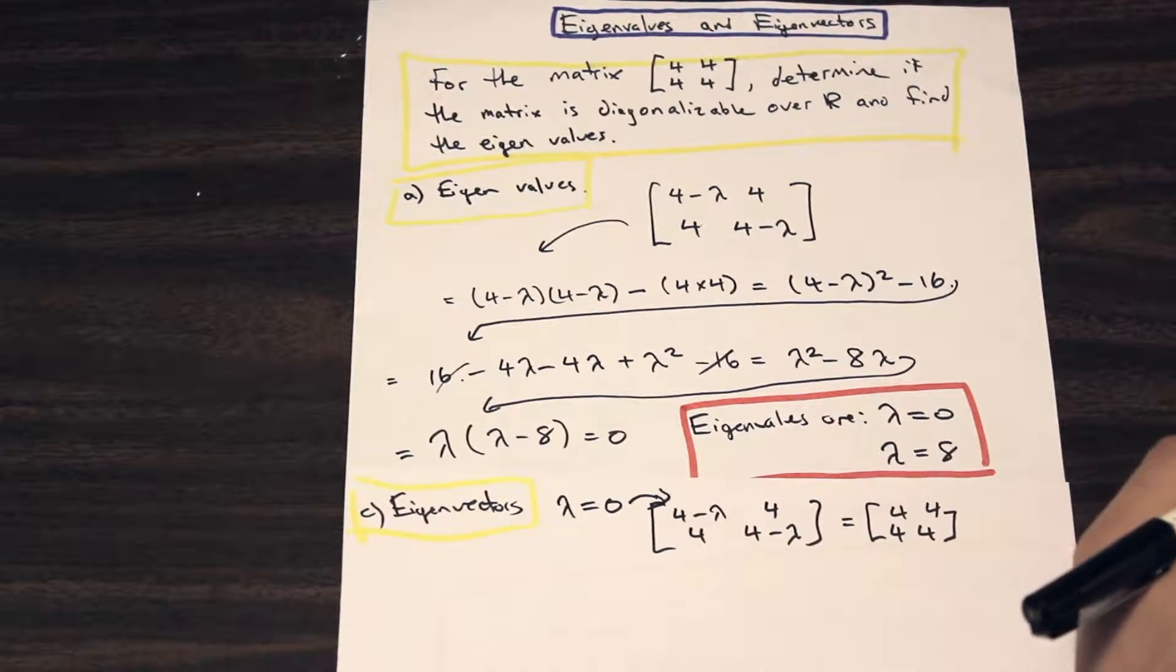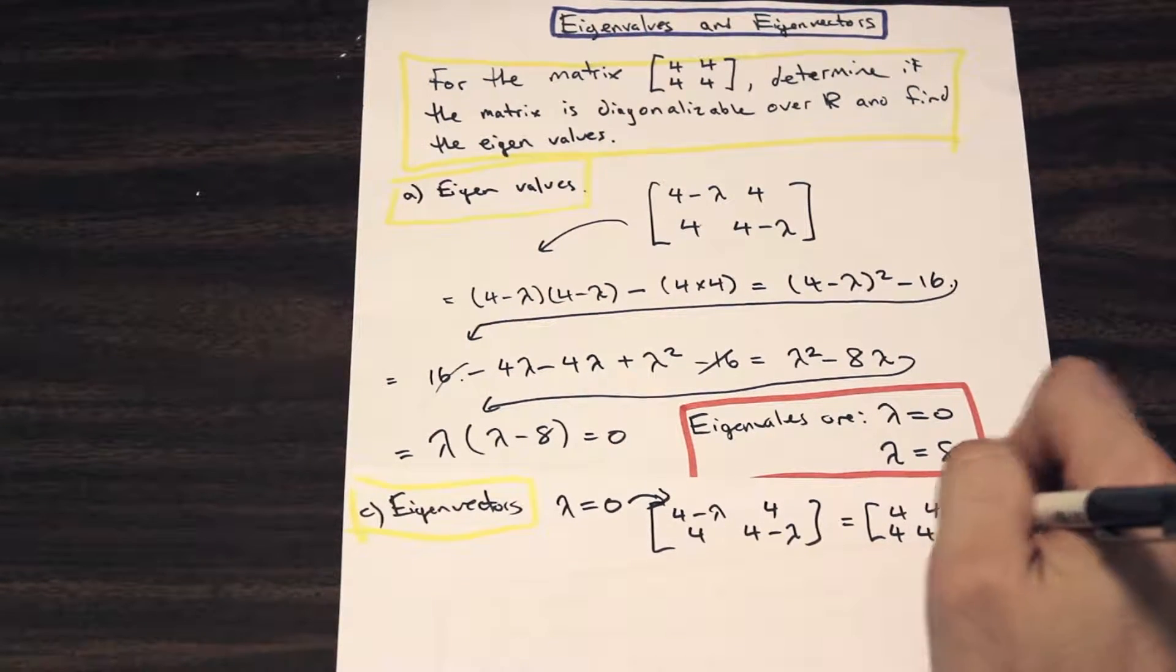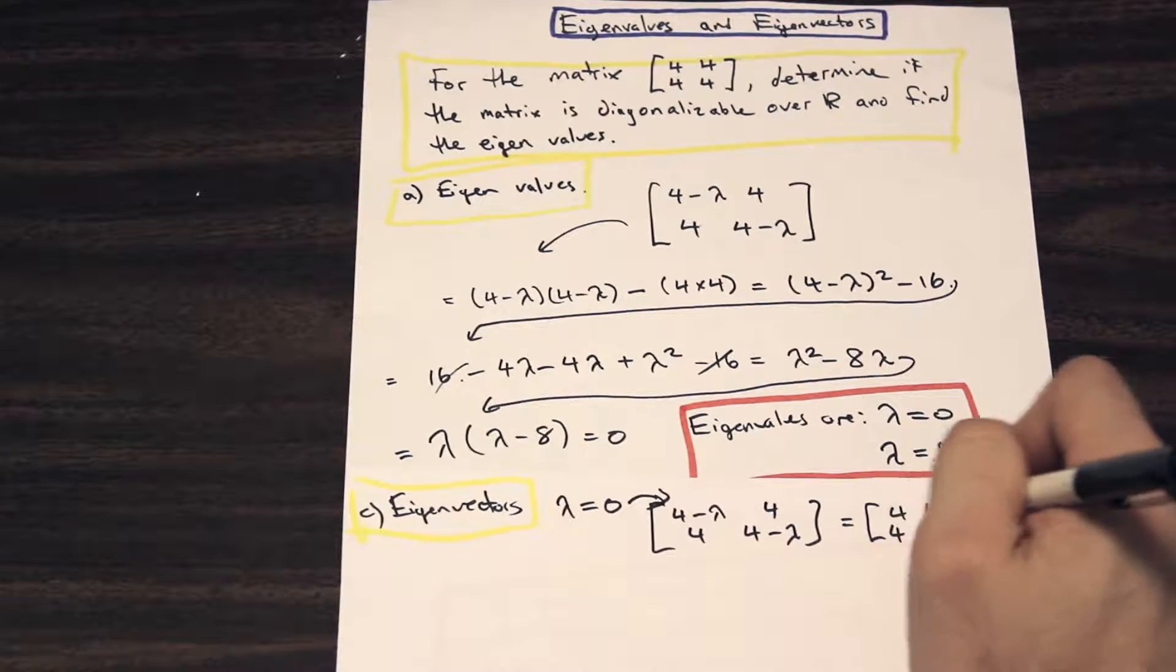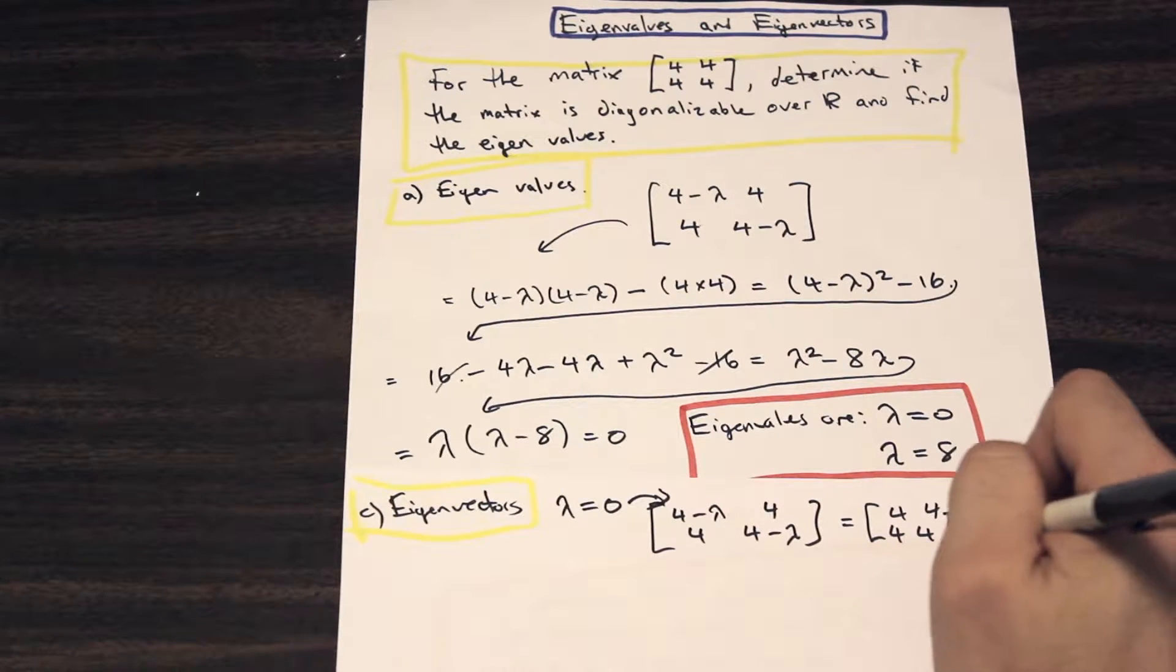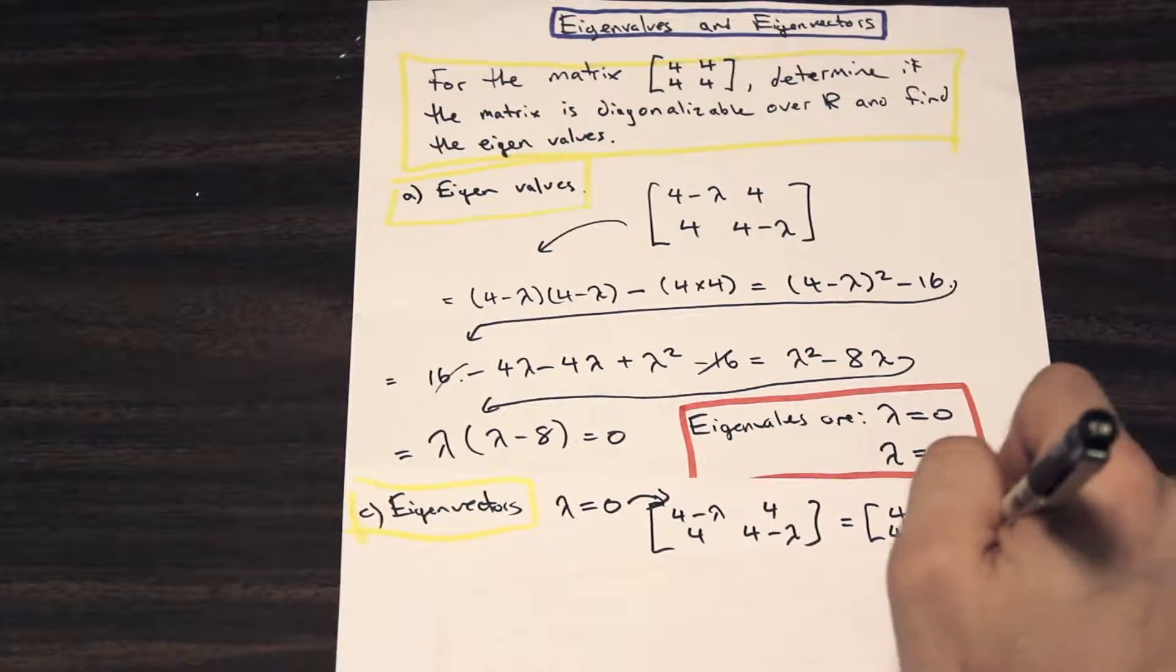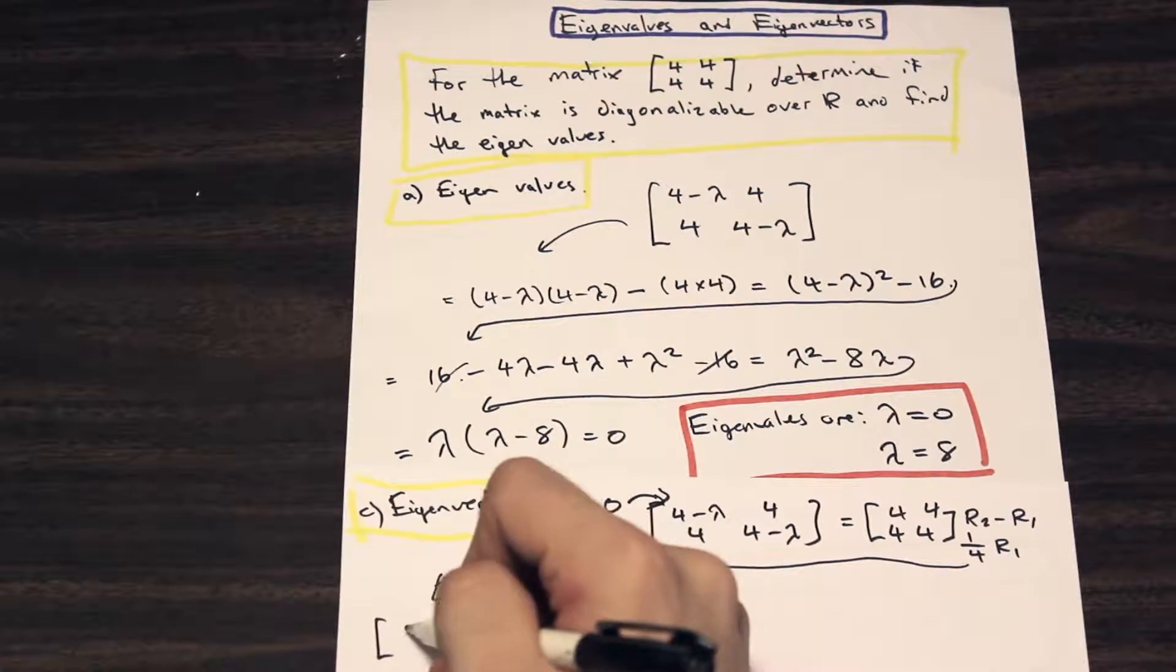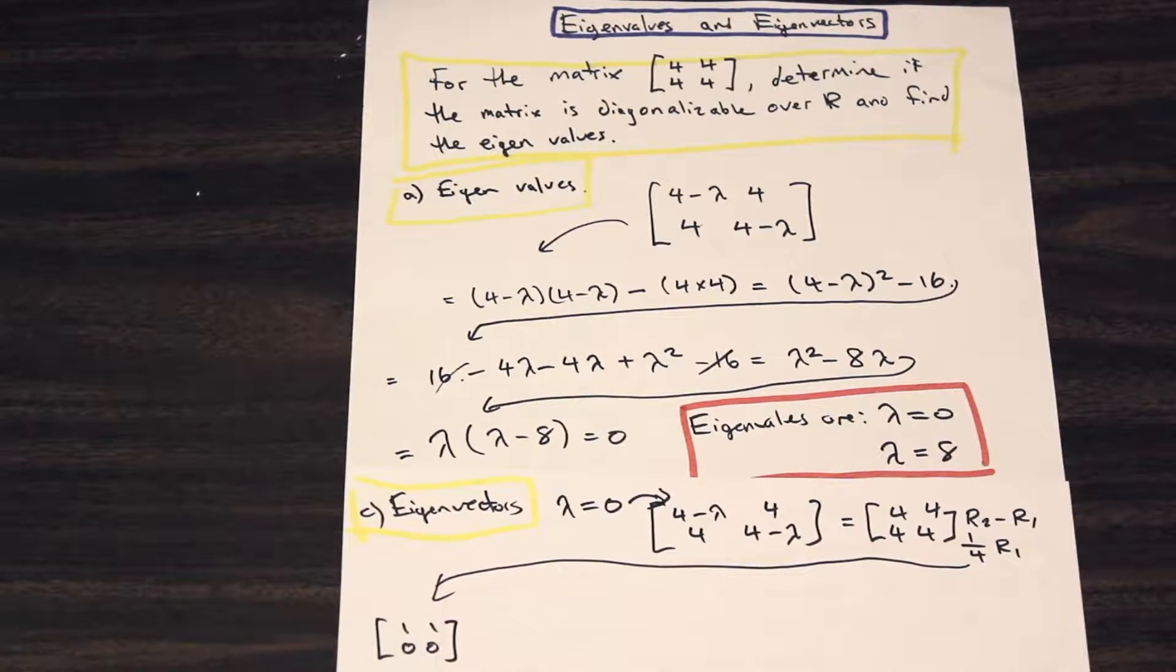Now, when we're solving for the eigenvectors, it helps to row reduce. So what we're going to do is subtract R2 from R1, and we're just going to divide the top row by 4. So we're going to say 1 over 4 R1. And what that's going to give us is our reduced matrix of 1, 1, 0, 0. Much easier to work with.